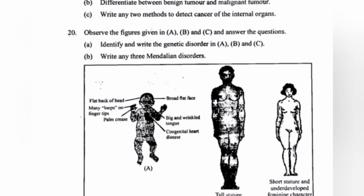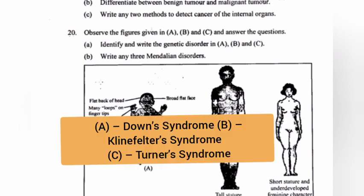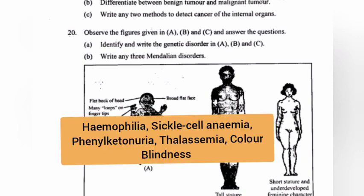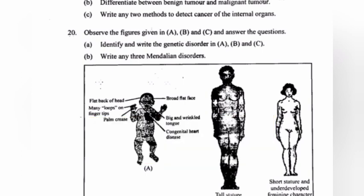Question 20: Observe the figures given in A, B, and C and answer the questions. a) Identify and write the genetic disorder in A, B, and C. Answer: A – Down syndrome; B – Klinefelter syndrome; C – Turner syndrome. b) Write any three Mendelian disorders. Answer: hemophilia, sickle cell anemia, phenylketonuria, thalassemia, color blindness – write any three.